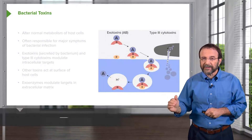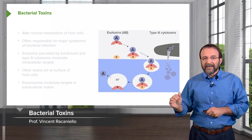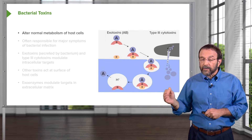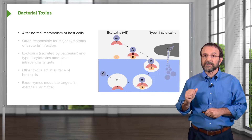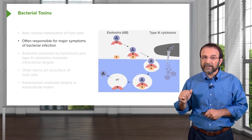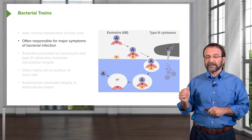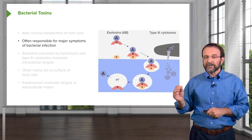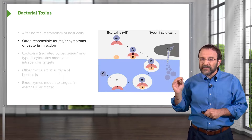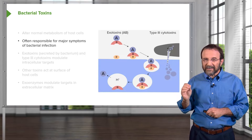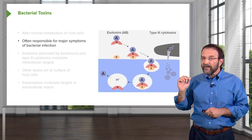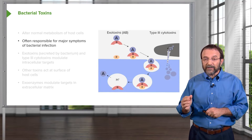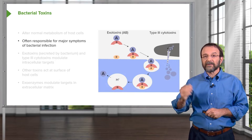Let's talk a bit about bacterial toxins. These are molecules produced by various bacteria that alter the normal metabolism of host cells, and they are often responsible for the major symptoms of bacterial infection. There are many different kinds of toxins that are produced. Interestingly, this is in direct contrast to viral infections, in which very few viral toxins have been identified. They cause disease in very different ways from bacteria.